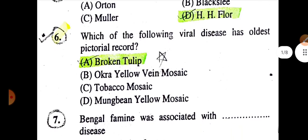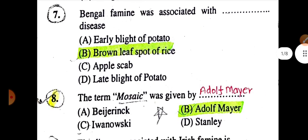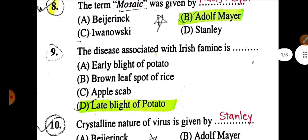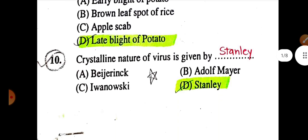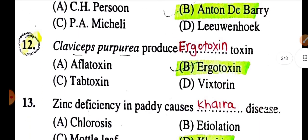Who gave the gene-for-gene hypothesis? Answer: H.S. Flor. Which of the following is a viral disease with the oldest pictorial record? Answer: Broken Tulip. Bengal famine was associated with Brown Leaf Spot of Rice. The term 'mosaic' was given by Adolph Mayer. The disease associated with the Irish Famine is Late Blight of Potato.